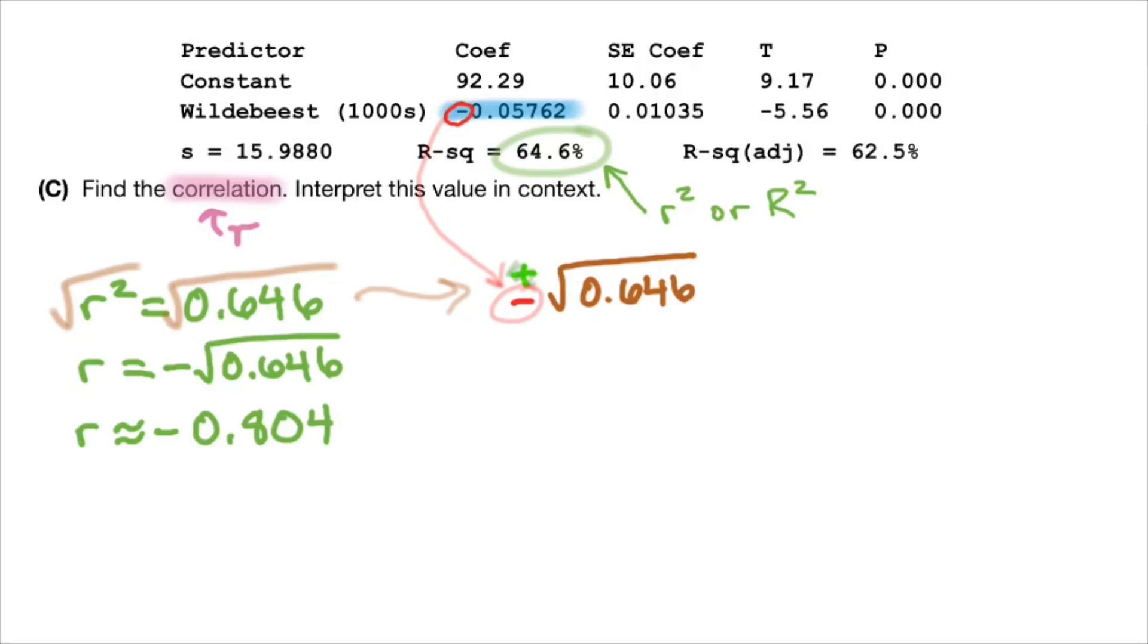Which should make sense, because 8 squared is 64, a number just slightly greater than 0.8, gives you a number just slightly greater than 0.64. So now all we need to do is interpret R.